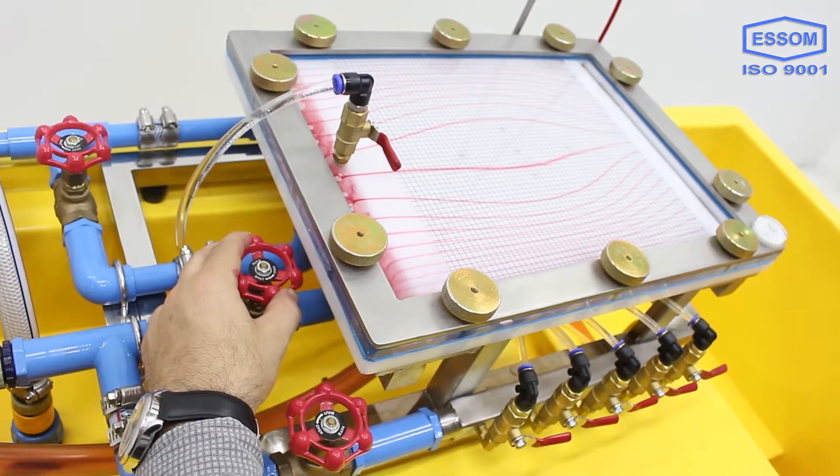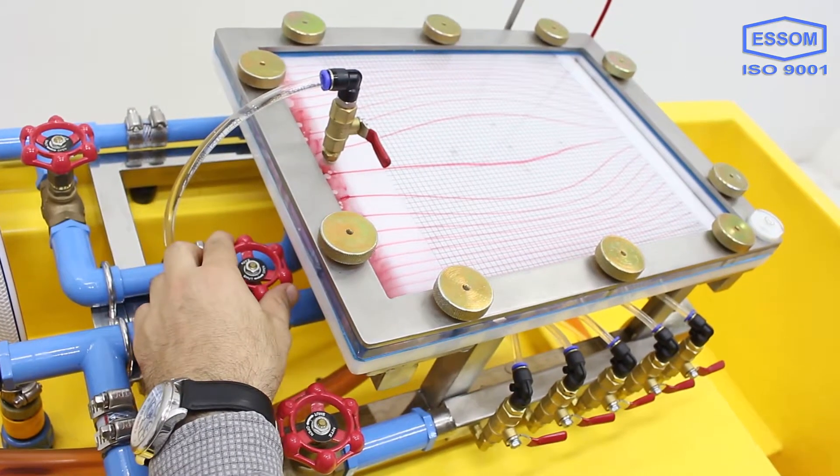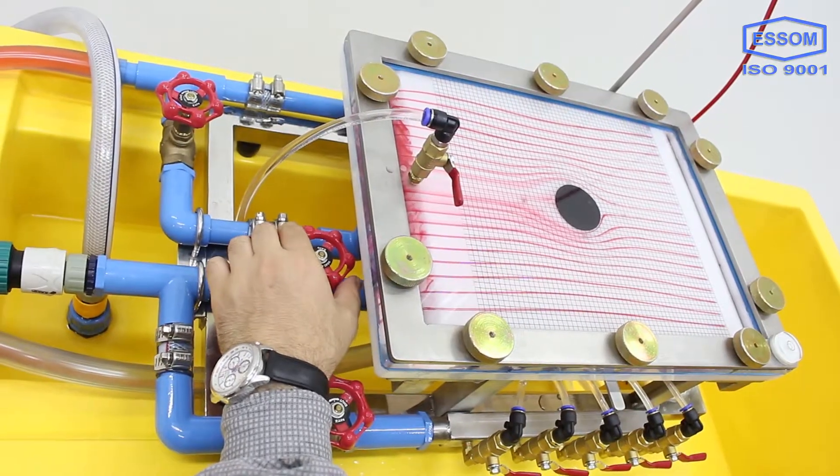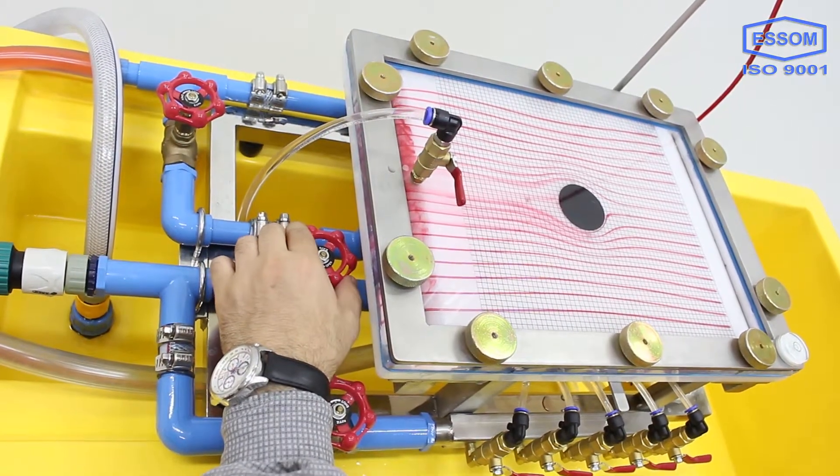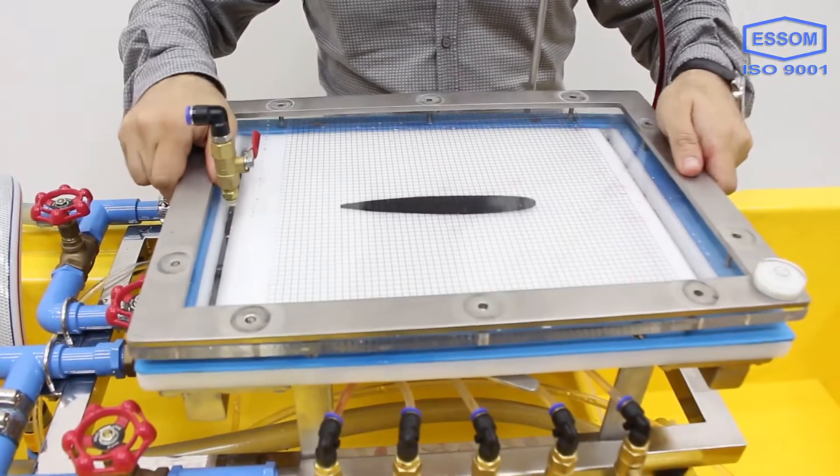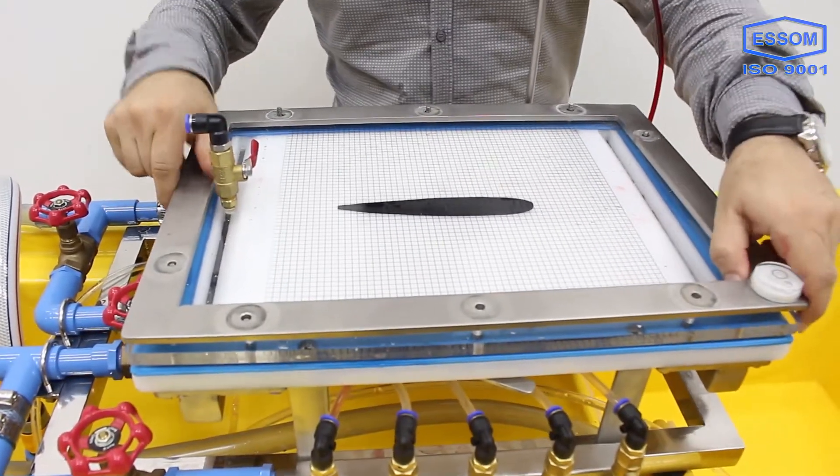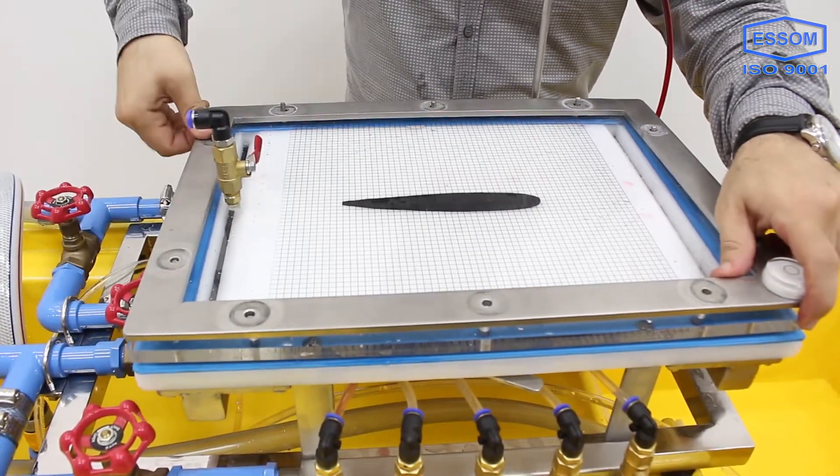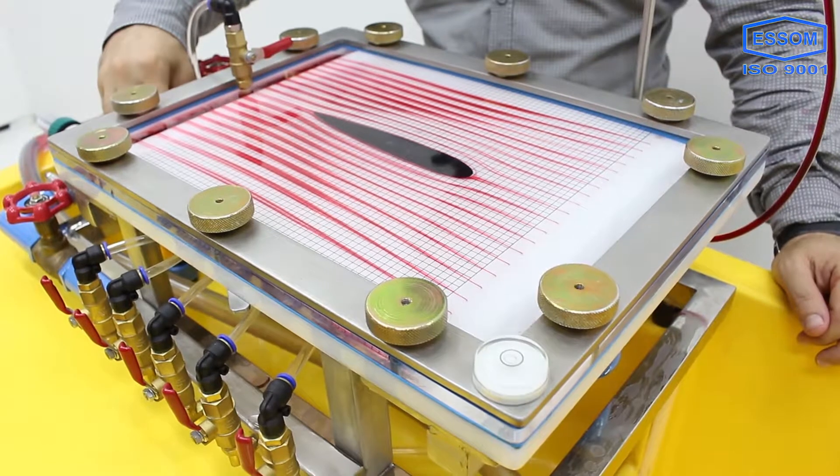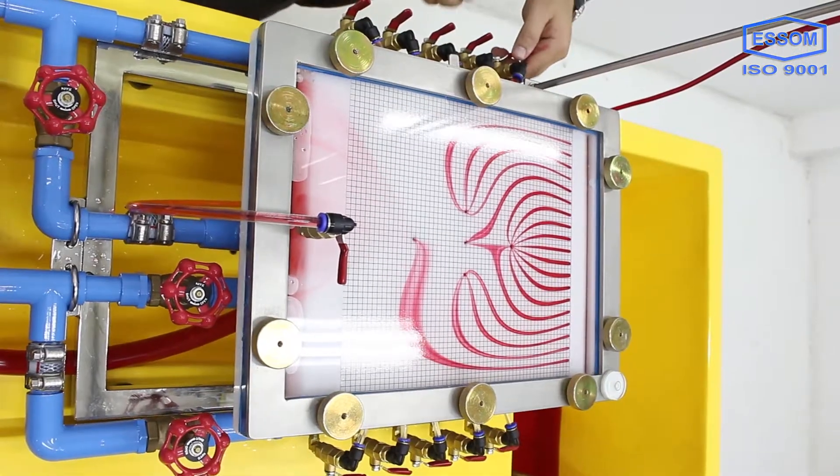plate is transparent and has a transparent grid to help observe streamline patterns. This plate is removable to insert or remove models. The bottom plate has small holes which are connected by valves to a water supply or source